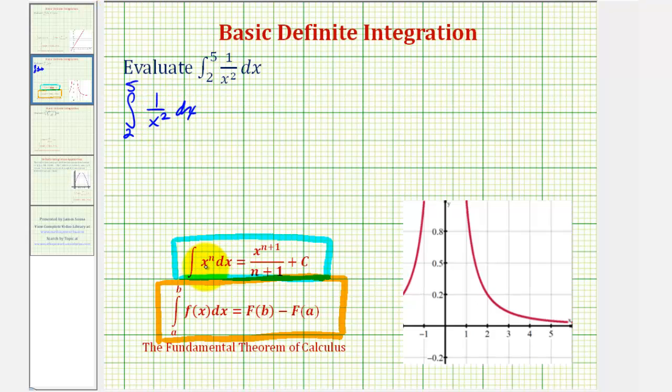We need this to be in the form of x raised to the power of n. So we're going to move this up to the numerator of the fraction, which will change the sign of the exponent. So this is equal to the definite integral from two to five of x to the power of negative two dx.